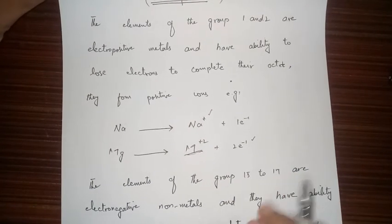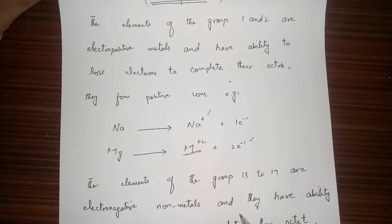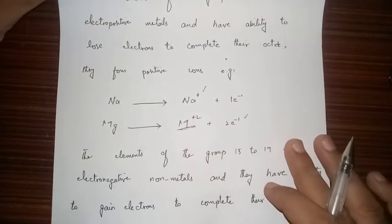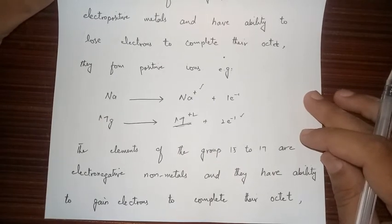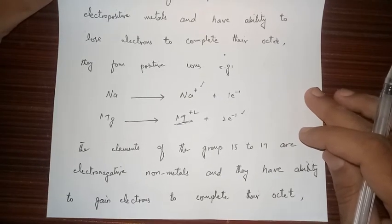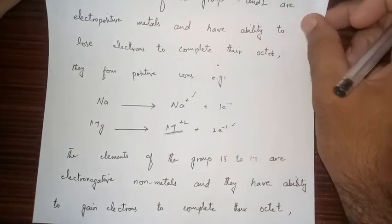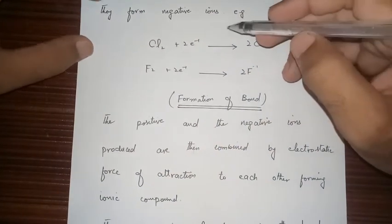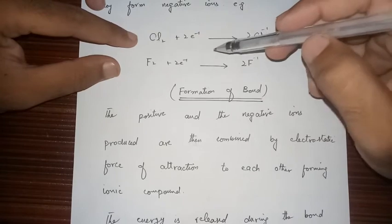Elements of groups 15 to 17 are electronegative non-metals and they have the ability to gain electrons to complete their octet. They have five, six, or seven valence electrons in their outermost shell, so they tend to gain electrons to complete their octet, gain stability, and achieve the nearest noble gas configuration. They form negative ions — for example, chlorine gains an electron to form chloride ion, and fluorine gains one electron to form fluoride ion.